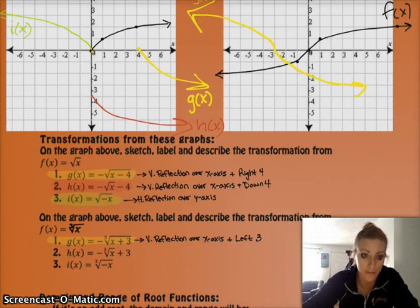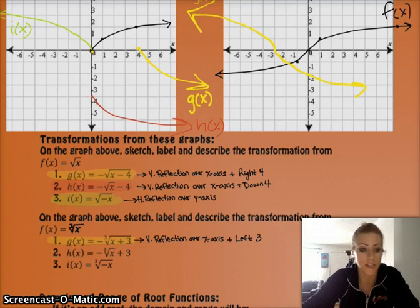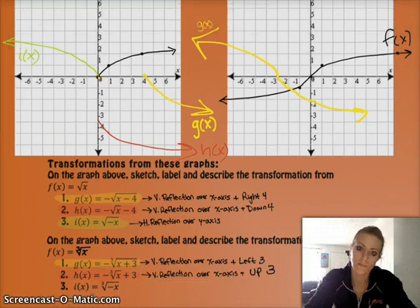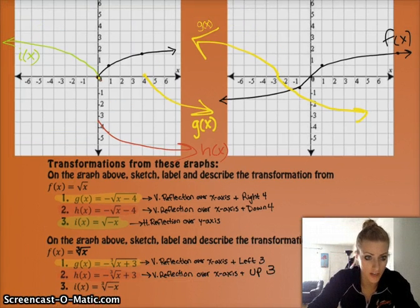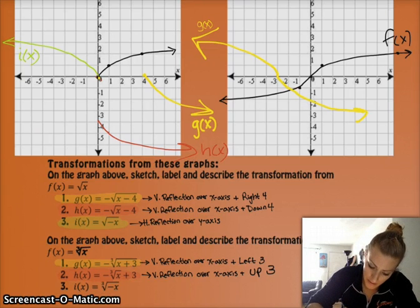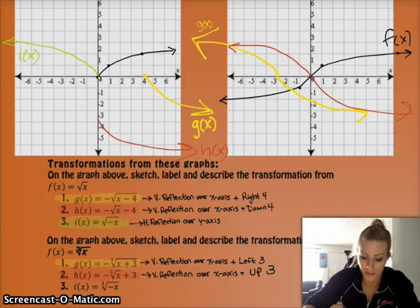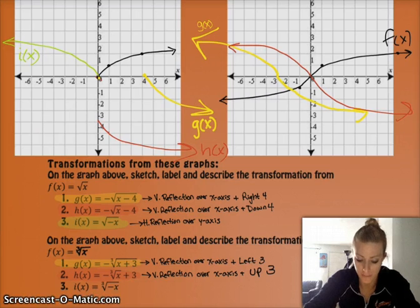h(x) has a negative out front again — also a vertical reflection over the x-axis — but that plus 3 is outside the radical, outside the root, which means instead of being a horizontal change, it's going to be an up-and-down shift, going up 3. So for h(x), we take the original f(x), the black graph, and reflect it over the x-axis. Then we move it up 3 spots, so the point that was (0, 0) is now at (0, 3).